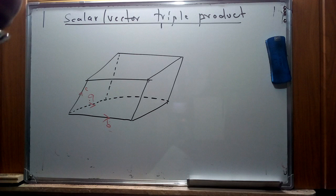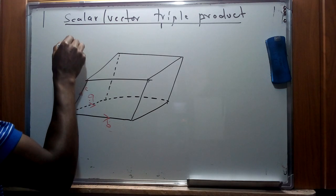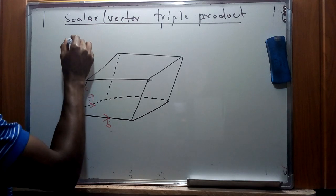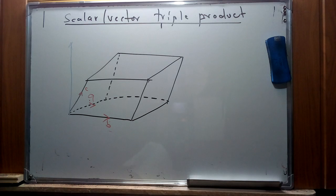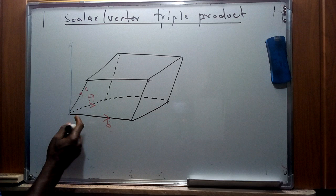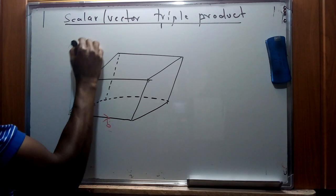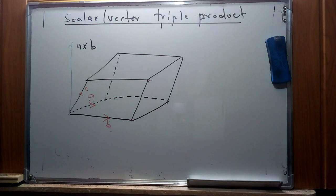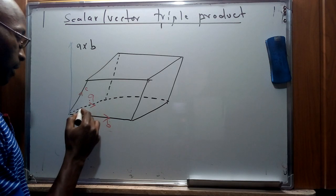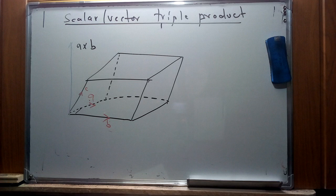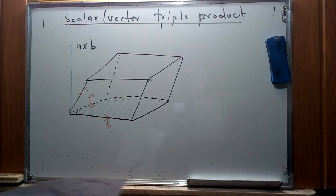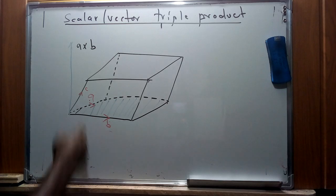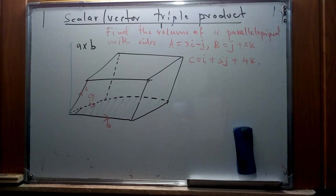A parallelepiped is a three-dimensional figure with vector components which I'll represent as a, b, and c. We're going to use the concept of trigonometry to figure out how we can represent different vector components of this parallelepiped. One vector that is perpendicular to the face formed by a and b can be represented as a × b, forming a resultant vector from that.